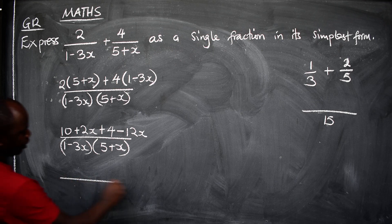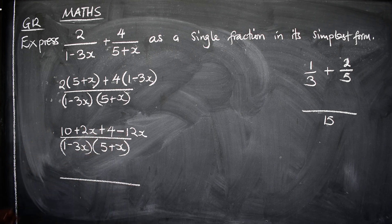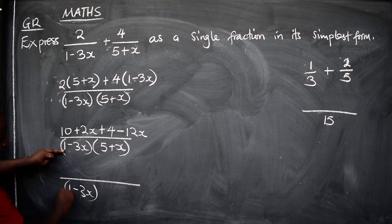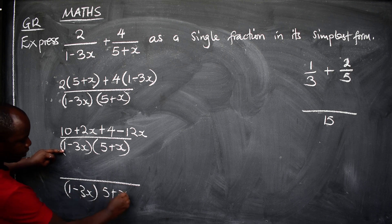Then from that part, you consider again on top, leave the denominator the way it is. 1 minus 3x, then 5 plus x, like this.